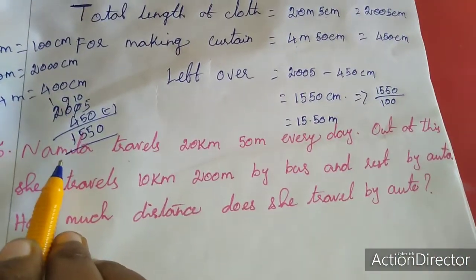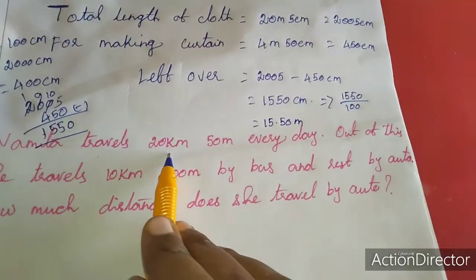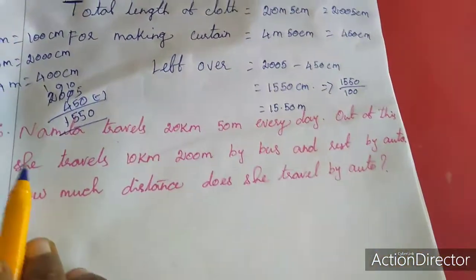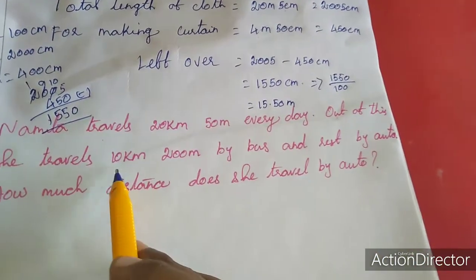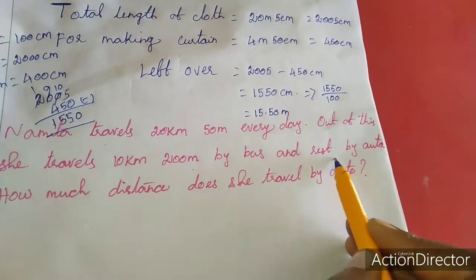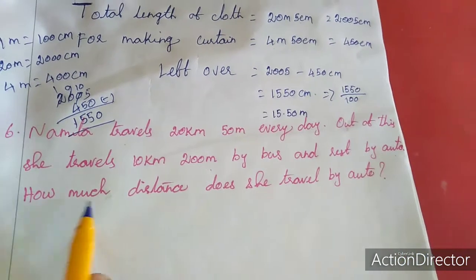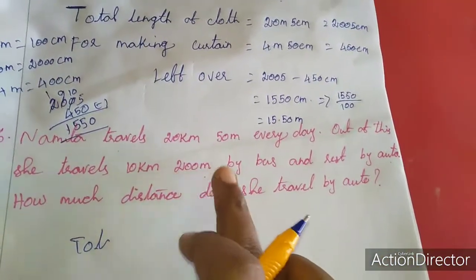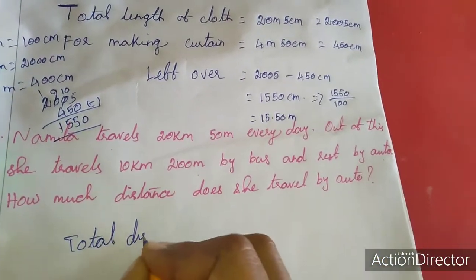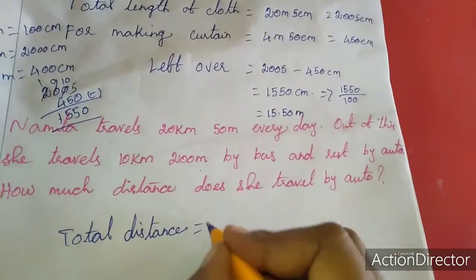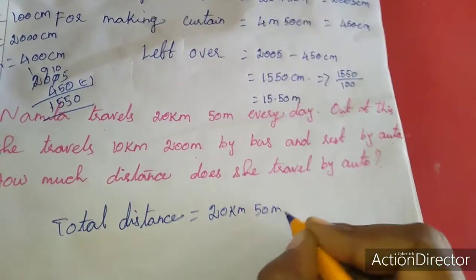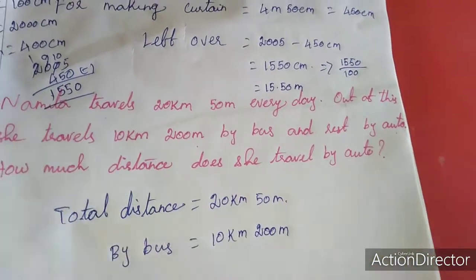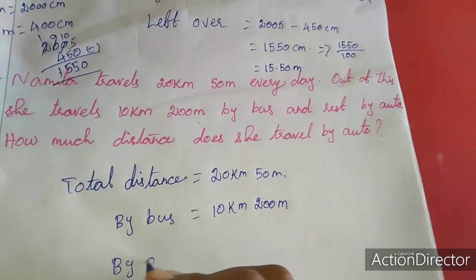Now we move to the 6th sum. Namita travels 20 kilometer 550 meter every day. Out of this she travels 10 kilometer 200 meter by bus, and the rest by auto. We need to find the distance she travels by auto. So total distance equals 20 kilometer 550 meter, by bus is 10 kilometer 200 meter, and by auto equals total minus bus — this is a subtraction.